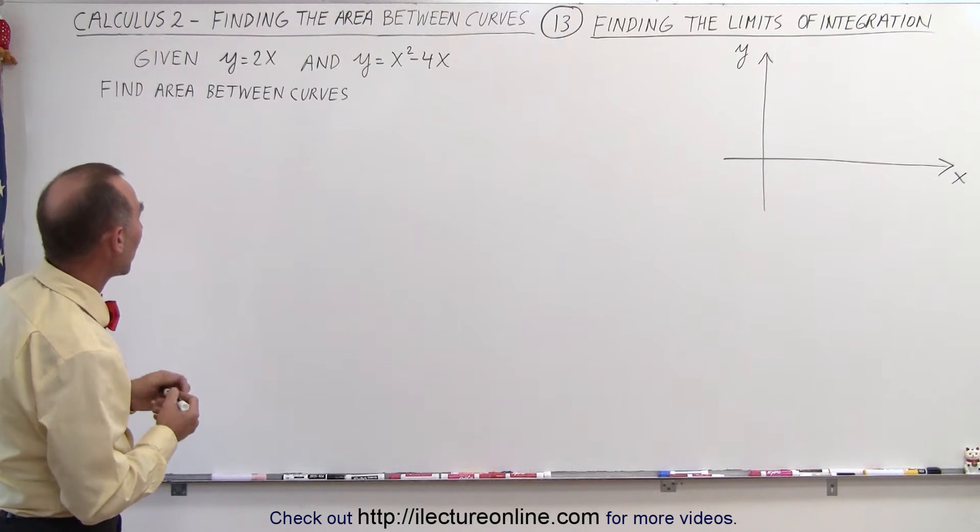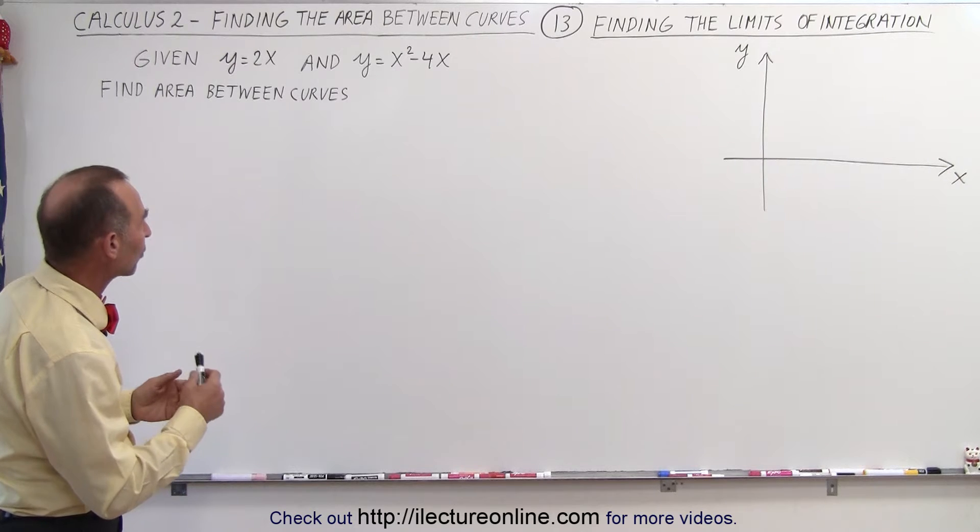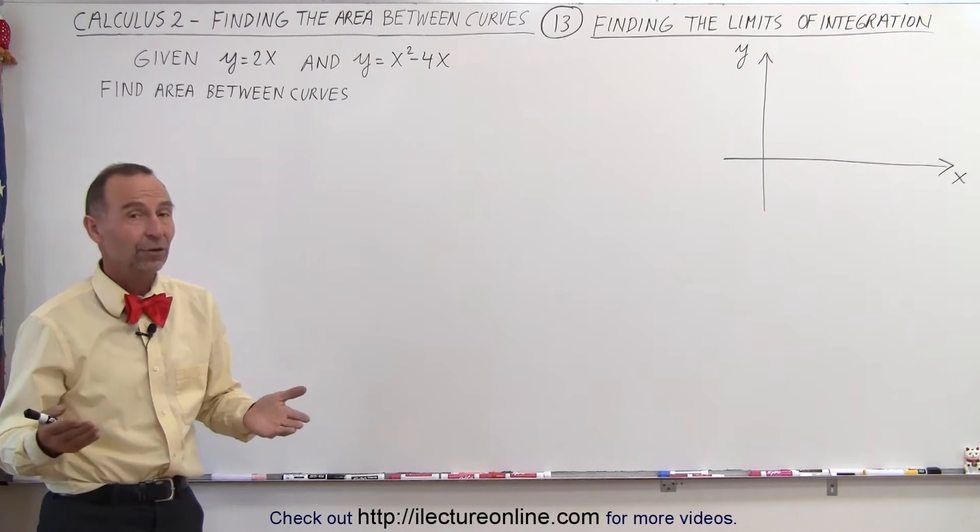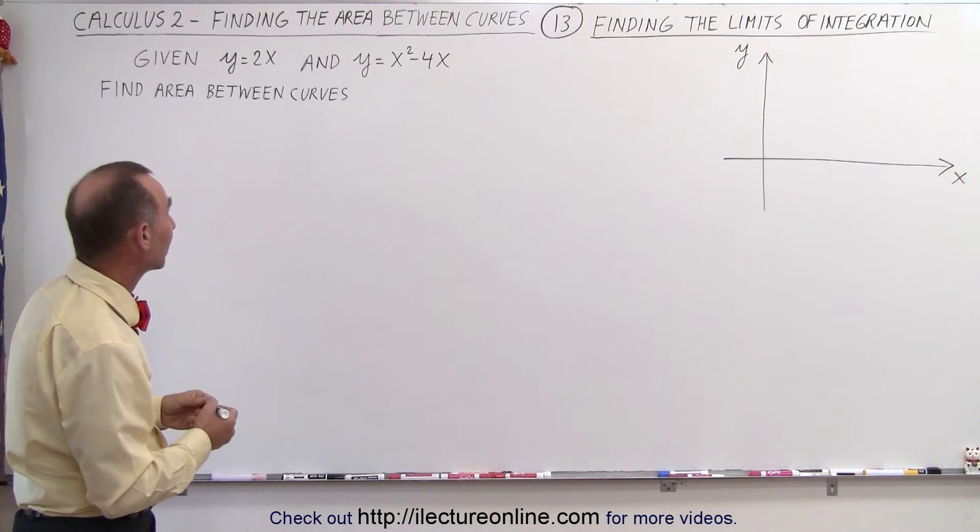So here we're given two functions: y equals 2x and y equals x squared minus 4x, and we're supposed to find the area between those two curves. So the first thing to do is to graph the two curves to see what they look like.